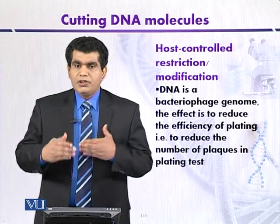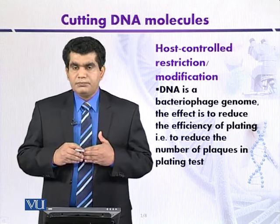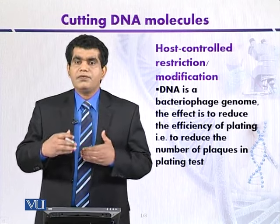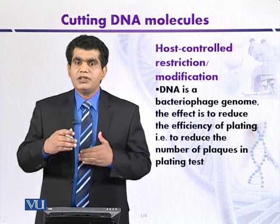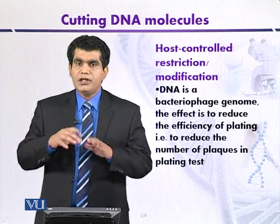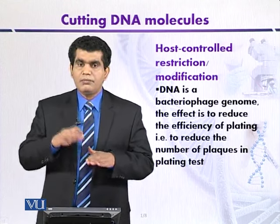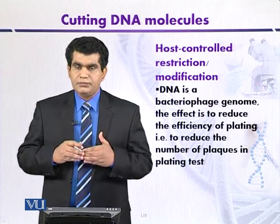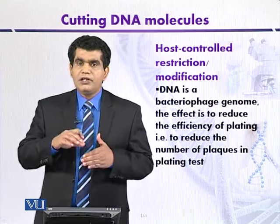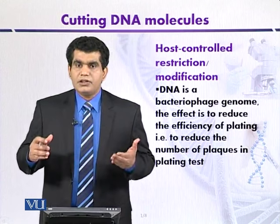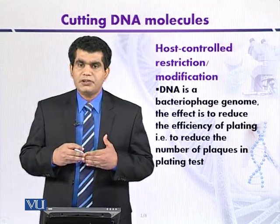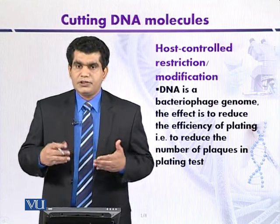When bacteriophages attack a particular host bacterium, we can monitor bacterial replication in terms of efficiency of plating — meaning the number of plaques produced during lysis. Plaques are clear zones produced on a lawn of bacterial cells after cell lysis. When cells are grown on a solid medium, bacterial lawns are produced, and if lysis occurs, clear zones appear that we can count. If the number of plaques is high, it means that plating efficiency is also high.